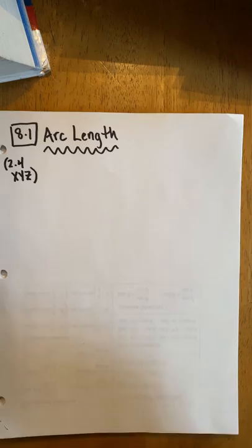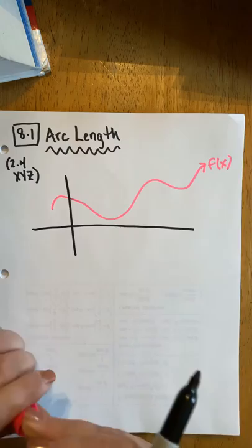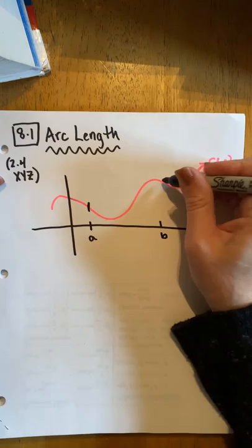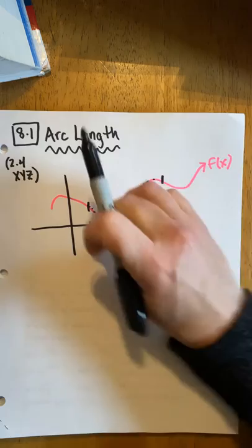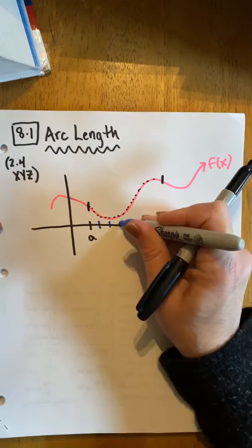What we're doing in 8.1 is we're calculating the length of a curve over a closed interval. So we have some function f of x, and we're looking at the function over a closed interval a to b. So we're literally just calculating the length of this curve. So if you wanted to walk along this curve, how long would it be? Or if we were to lay a piece of string down on that curve and then lift it up and measure it, what would be the length of the curve?